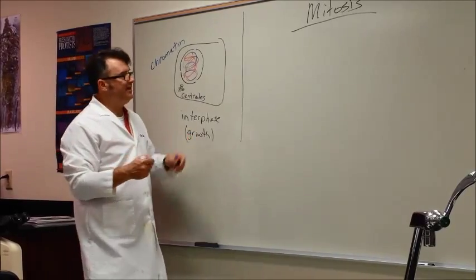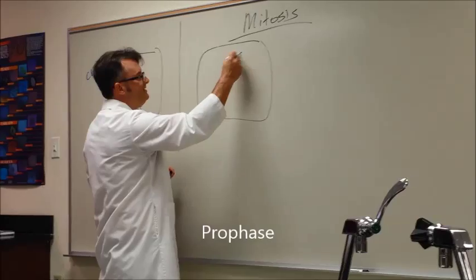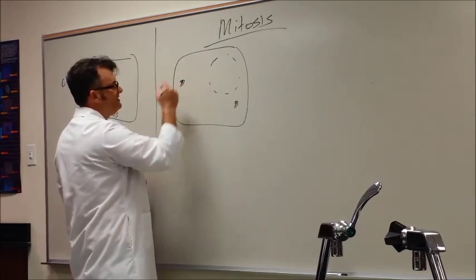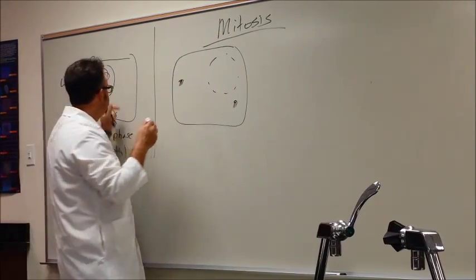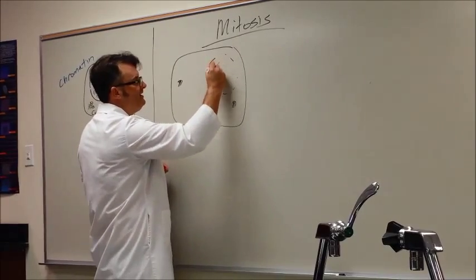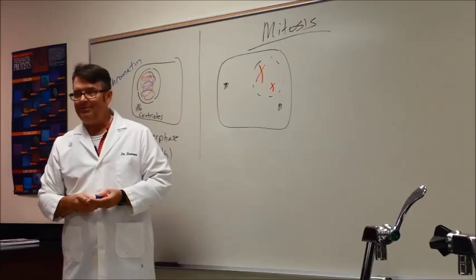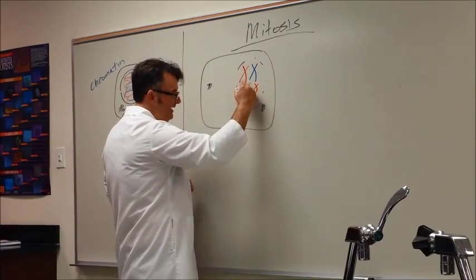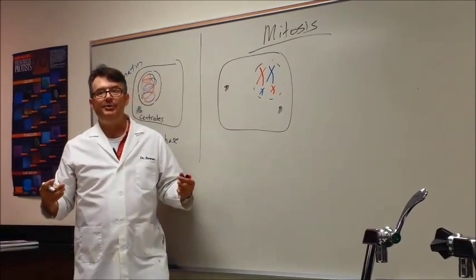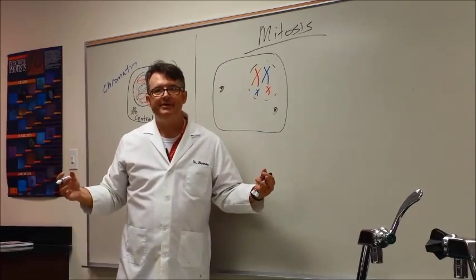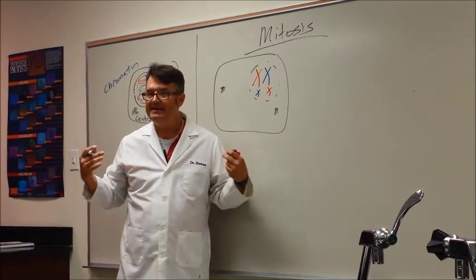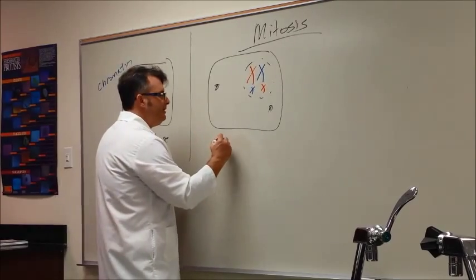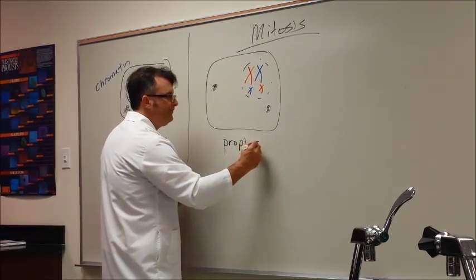The first phase of mitosis is called prophase. In prophase the nucleus begins breaking down and these centrioles begin moving to opposite poles of the cell. And the chromosomes instead of being long and stringy like spaghetti, they condense into X shaped structures. I'm going to draw a big red and a big blue and a baby red and a baby blue. These are chromosomes we're going to track through here. This is called prophase.